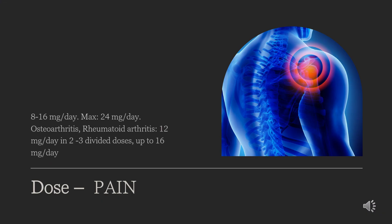Dosage: The use of Lornoxicam for pain relief and anti-inflammatory purposes depends on the age and condition of the patient. For adults: oral (PO) pain — 8–16 mg per day, maximum 24 mg per day. For osteoarthritis and rheumatoid arthritis — 12 mg per day in 2–3 divided doses, up to 16 mg per day. For intramuscular (IM) pain — 8 mg 1–2 times per day, maximum 24 mg per day.